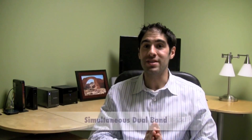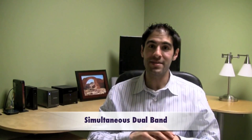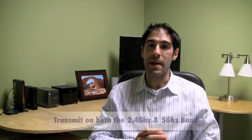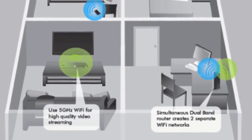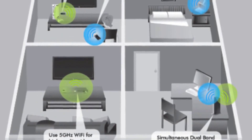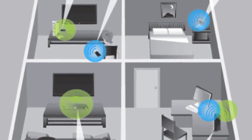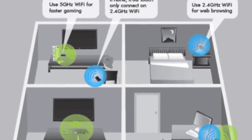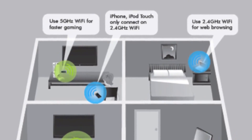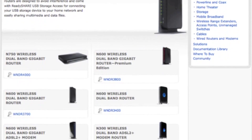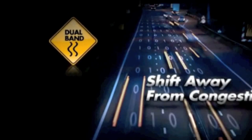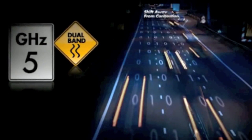Now the second is what we call simultaneous dual-band — these are the routers that are capable of transmitting on both the 2.4GHz band and the 5GHz band at the same time. This allows you to provide a completely separate, clean network for applications like HD video streaming and gaming, while utilizing the 2.4GHz band for all your other devices. All Netgear routers in the high performance category are simultaneous dual-band, so shift away from the congested 2.4GHz band and let your 5GHz band devices hit the fast lane.